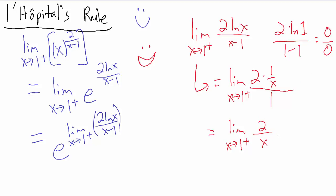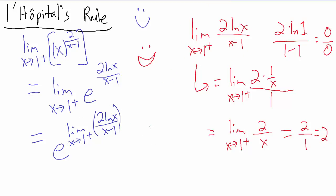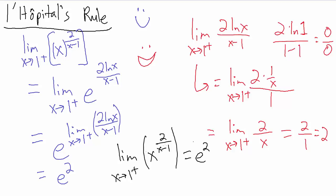Evaluating 2 over x by direct substitution as x goes to 1, we get 2 divided by 1, which is just 2. So this inner limit equals 2. Remembering that our original limit equals e to that inner limit, we get e to the second power, or e squared. So the limit as x goes to 1 from the positive side of x raised to the power 2 over x minus 1 equals e squared. That's one more example of using L'Hôpital's rule to evaluate a limit.